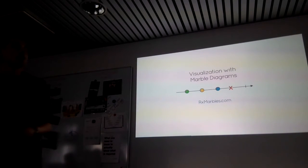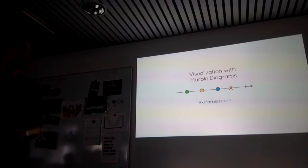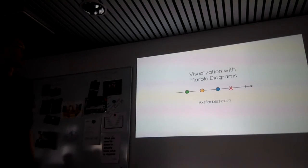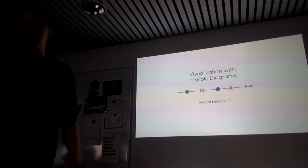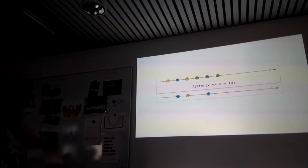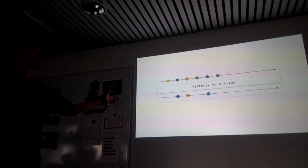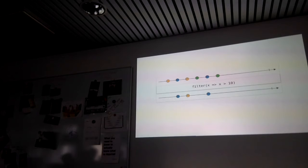One common way to visualize how observables work is using marble diagrams — there's a website at rxmarbles.com. The horizontal line represents time, the dots represent values emitted by the observable, the X represents an error, and the vertical line represents the stream completing. Here we have a source stream with different values being emitted, then a filter method applied that only passes values bigger than 10, and underneath we see the resulting stream.